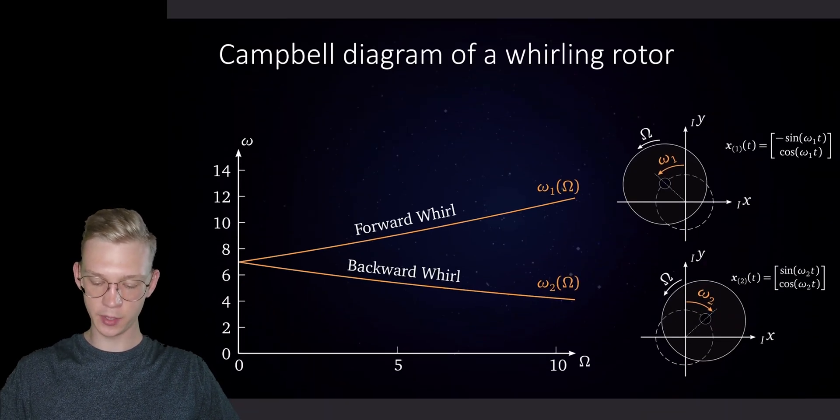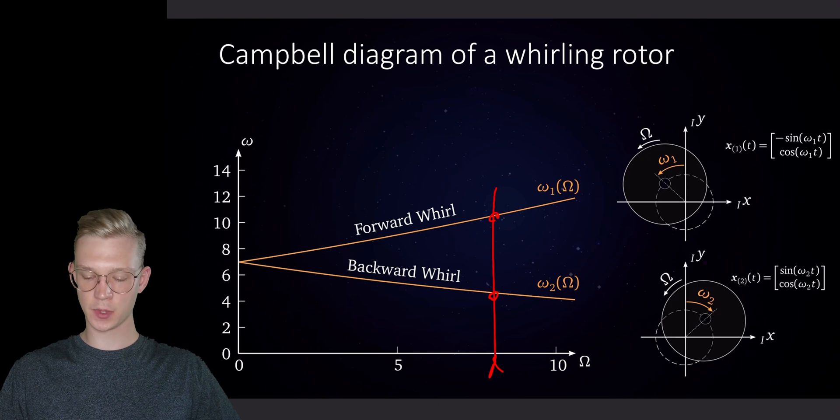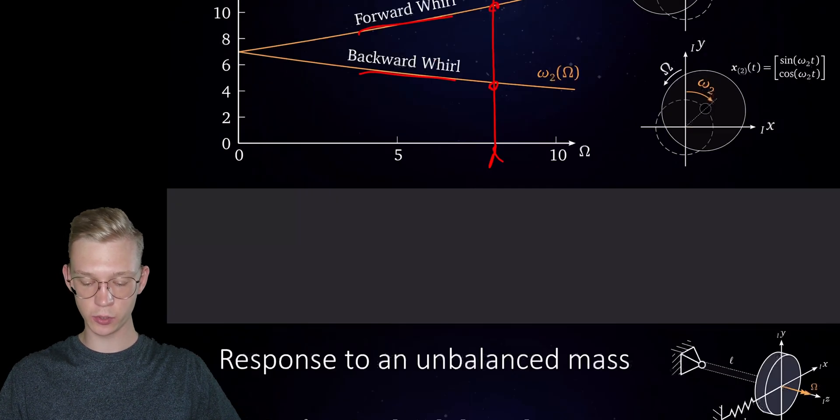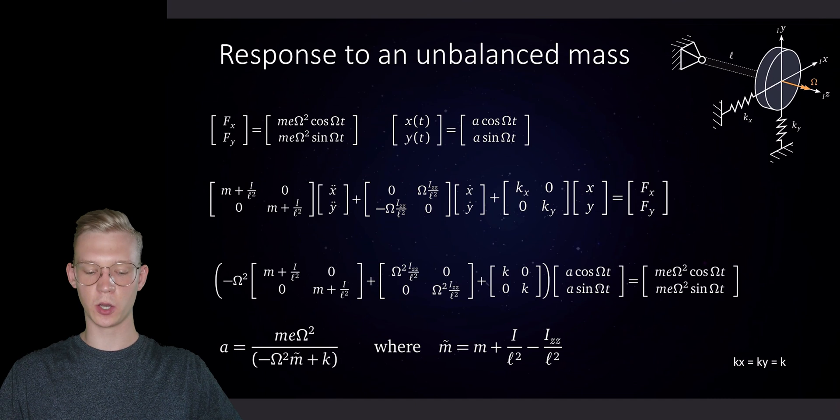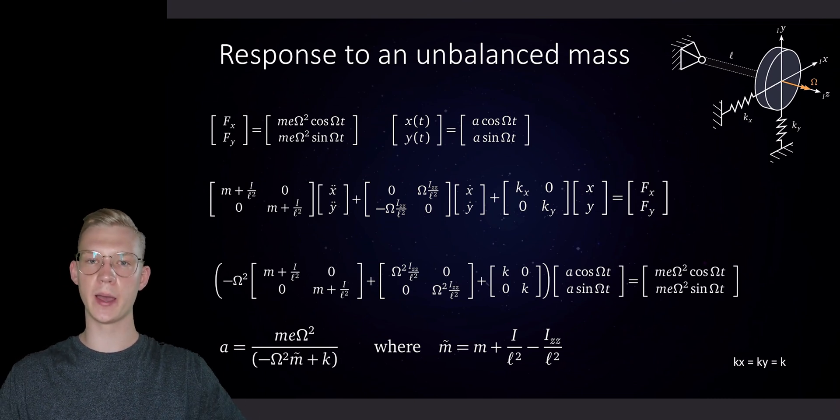Then we talked about the Campbell diagram where for one rotation speed we will have two possible eigenfrequencies. One is the forward whirl and one is the backwards whirl. And now we would like to talk about the response of our system to an unbalanced mass.